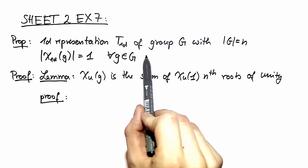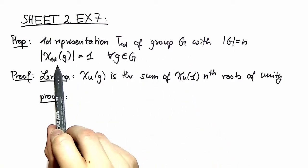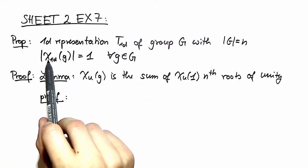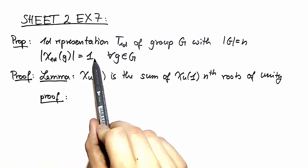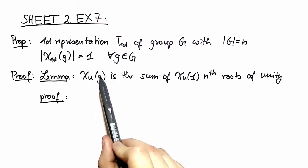We have a one-dimensional representation of a group and the absolute value of any group element in that representation is equal to 1. If you think about characters and the definition of characters and matrix representations of those characters, this statement is trivial.